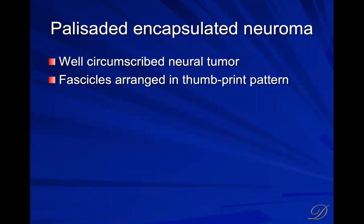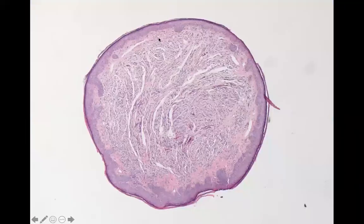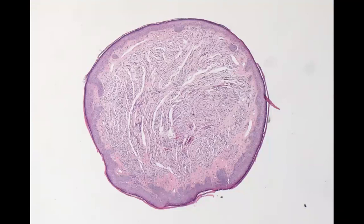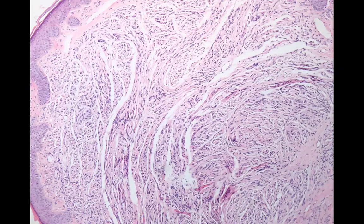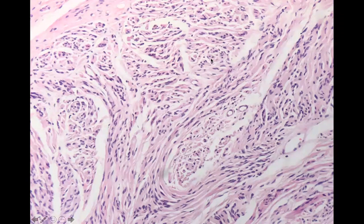Palisade encapsulated neuroma is a benign tumor-like proliferation of more mature nerve bundles. It's well circumscribed and arranged in fascicles because mature nerves occur in fascicles, giving it a thumbprint pattern. Here we have a well-circumscribed nodule with clefts between the fascicles. You see pink wavy cytoplasm with tapered-ended nuclei — this is a palisade encapsulated neuroma, probably the most common type we see.